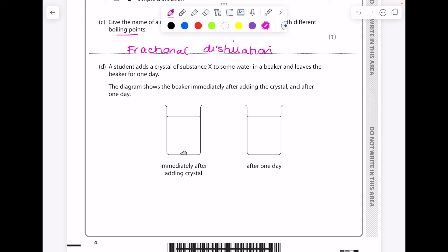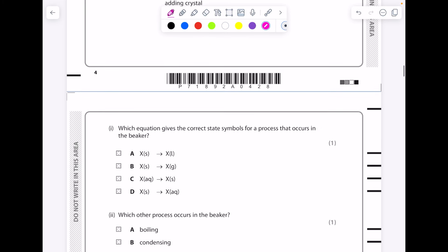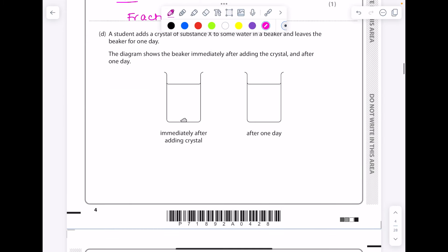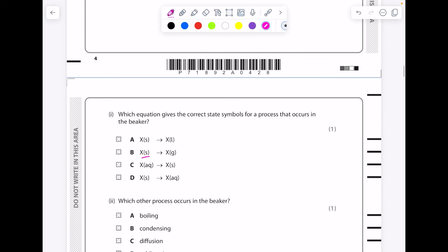A student adds a crystal of substance X to some water in a beaker and leaves the beaker for one day. The diagram shows the beaker immediately after adding the crystal and after one day. Which equation gives the correct state symbols for the process that occurs in the beaker? So we're going from a solid crystal and it's dissolving, so that will be aqueous. So it's not that, it's not that, that's the wrong way round. That is the correct answer.